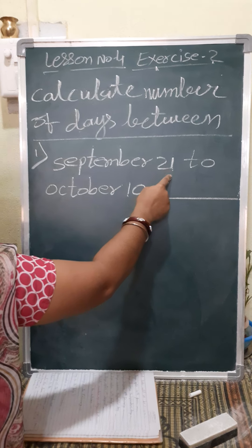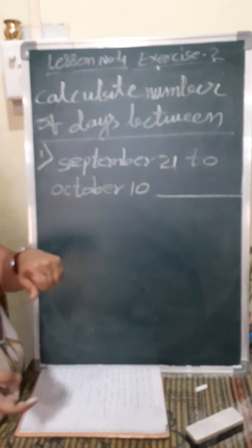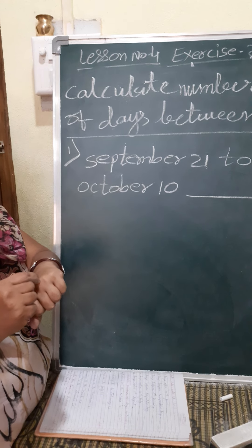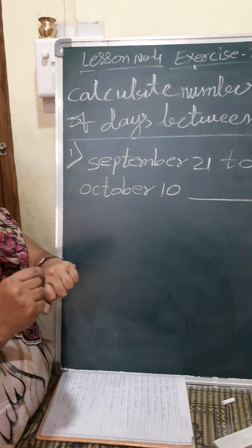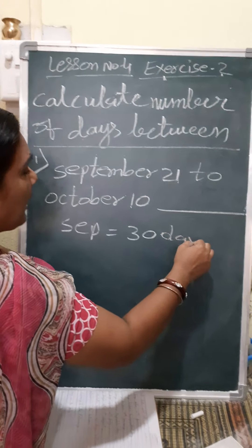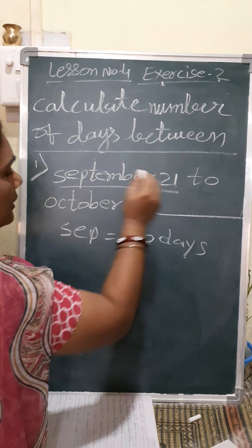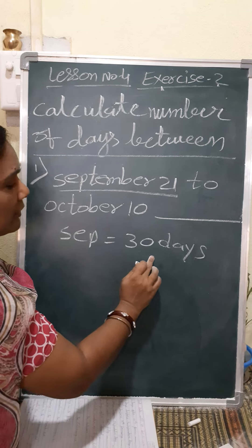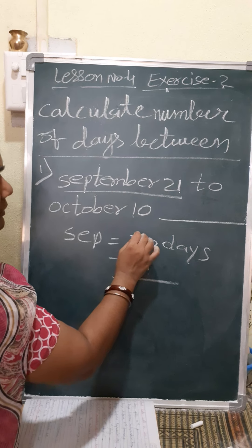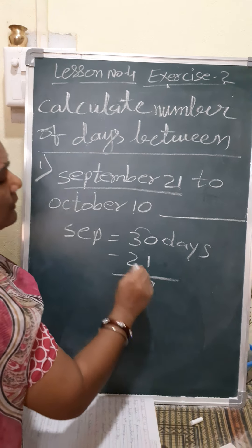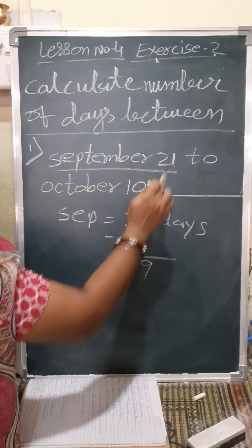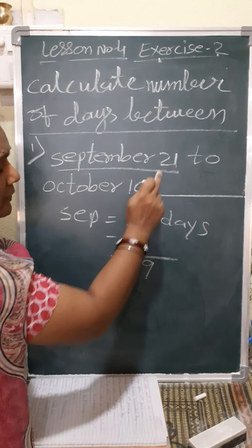Here 21 is there. September month — how many days are there? If you don't know, you can go through this: January, February, March, April, May, June, July, August, September — September month equals 30 days. So first of all we find out: September month is 30 days. 30 days minus 21 — 0 minus 1 is not going, borrow; 10 minus 1 is 9. So this month only 9 days remain, because we are already at 21, and after that we count — only 9 days remain in September.